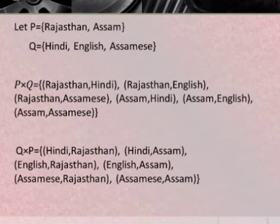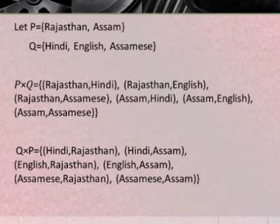Let set P equal Rajasthan and Assam, and set Q equal Hindi, English, and Assamese. Then the Cartesian product P into Q equals: Rajasthan Hindi, Rajasthan English, Rajasthan Assamese, Assam Hindi, Assam English, and Assam Assamese.